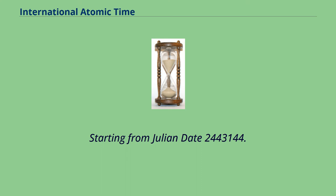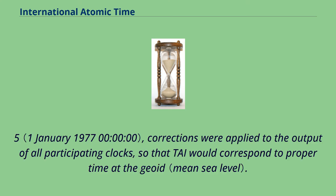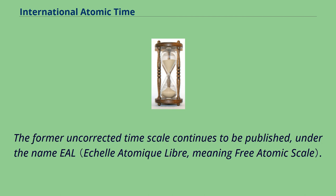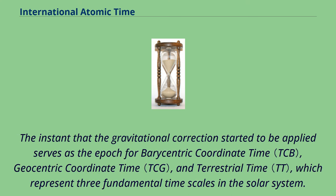Starting from Julian date 2,443,144.5, corrections were applied to the output of all participating clocks, so that TAI would correspond to proper time at the geoid. Because the clocks were, on average, well above sea level, this meant that TAI slowed by about one part in a trillion. The former uncorrected time scale continues to be published under the name EAL. The instant that the gravitational correction started to be applied serves as the epoch for barycentric coordinate time, geocentric coordinate time, and terrestrial time, which represent three fundamental time scales in the solar system.